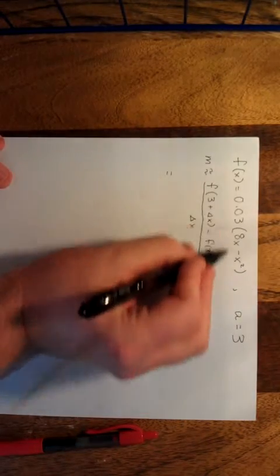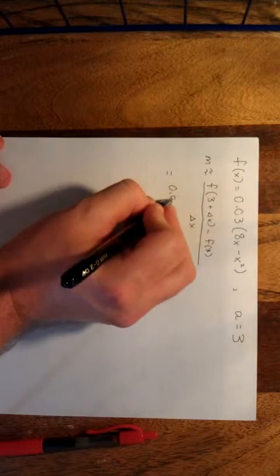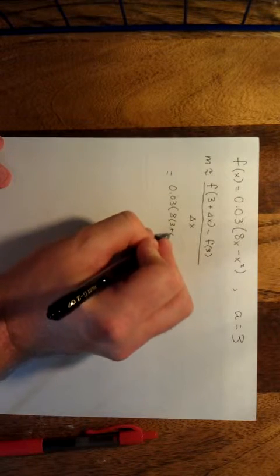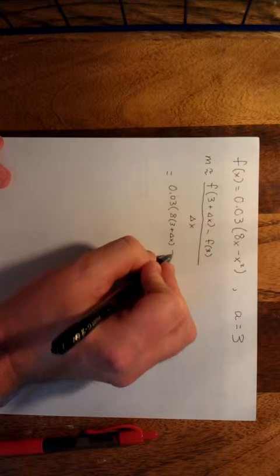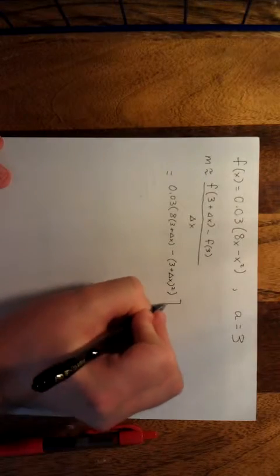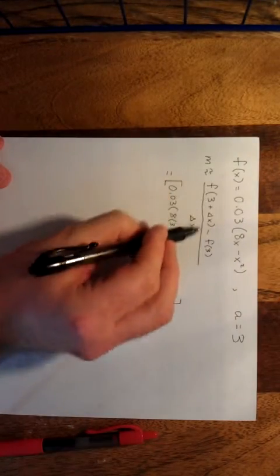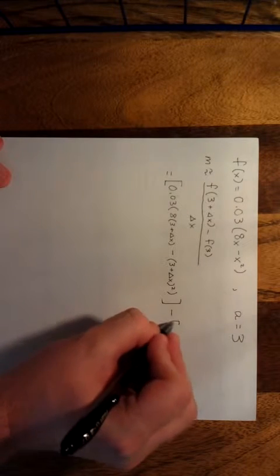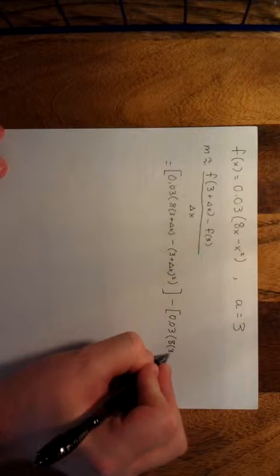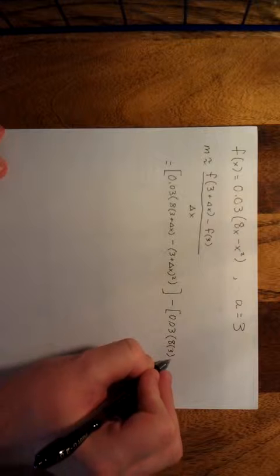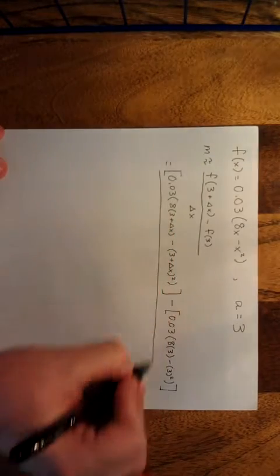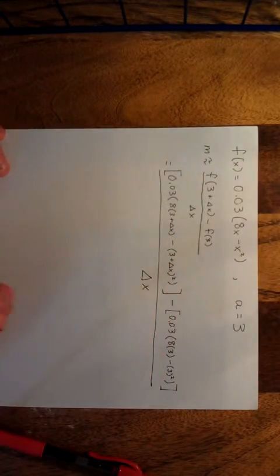Plugging the function into the expression gives us 0.03 times [8(3 + Δx) − (3 + Δx)²] minus 0.03 times [8(3) − 3²], all over delta x. That is a big numerator, all over delta x.